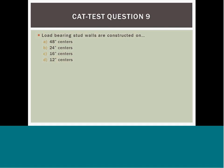Question 9: Wall studs are constructed on A) 48-inch centers, B) 24-inch centers, C) 16-inch centers, or D) 12-inch centers. Answer C is the best answer. Answer A is not providing the proper support for a load-bearing wall. Answer B is sometimes an acceptable measurement for non-load-bearing walls, and answer D is sometimes acceptable for special construction. Answer C — 16-inch centers — is the best answer. Always check your local and state codes to ensure you are using the proper standards.